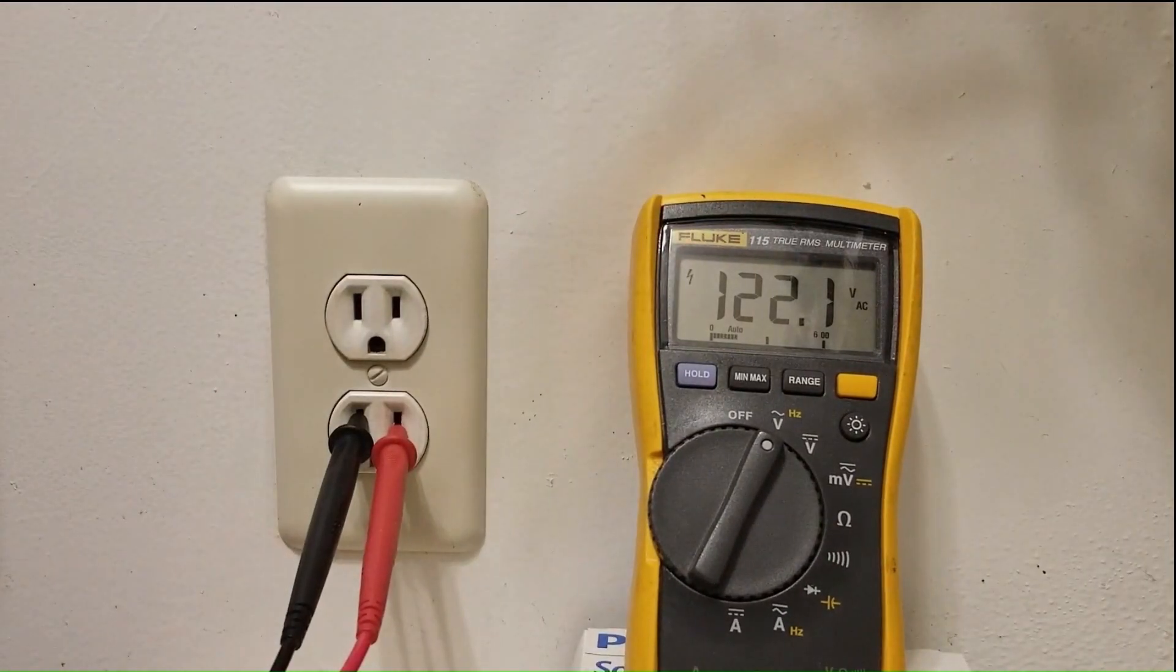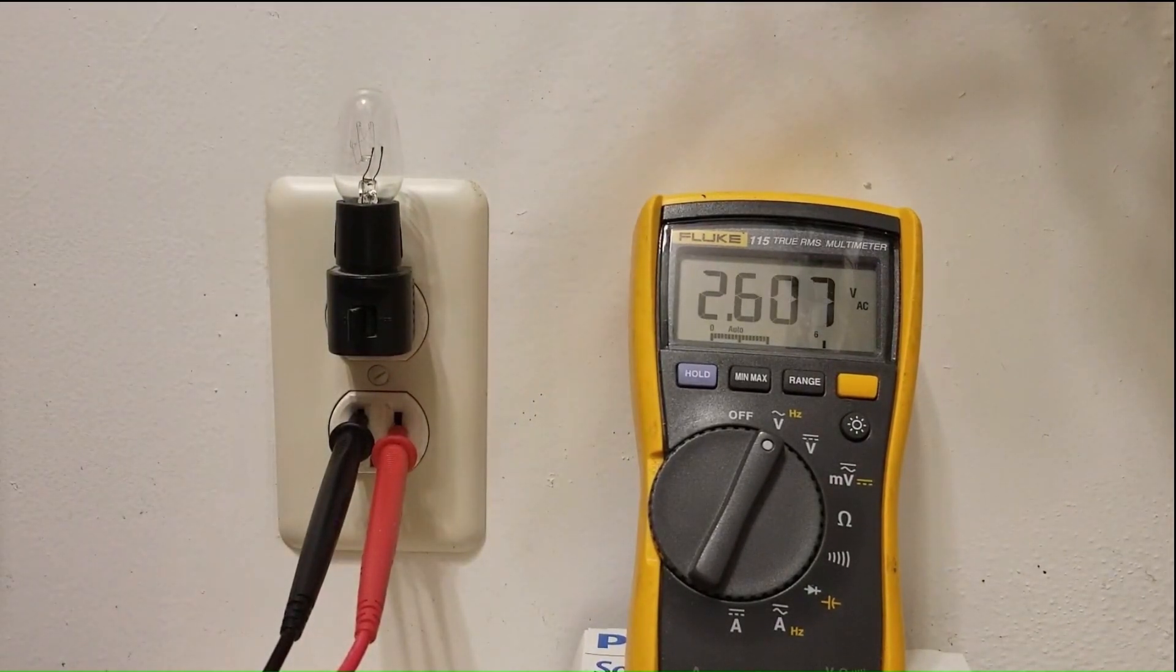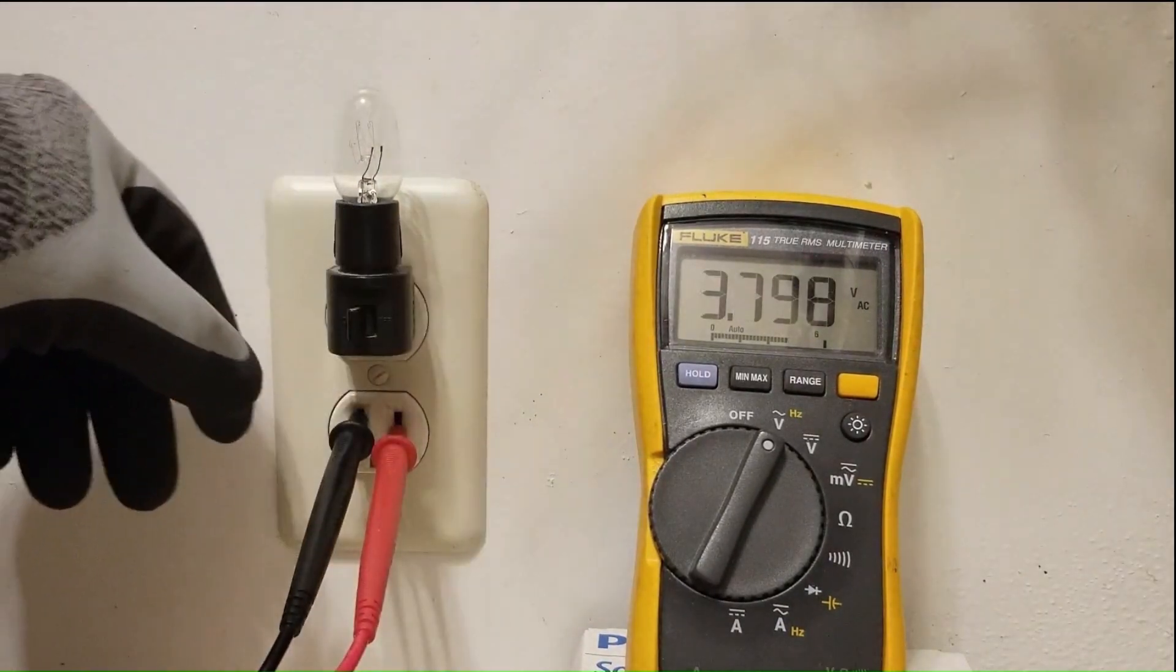I get 122 volts, which is what you would expect. But when I plug in the light, the voltage drops to just four volts. This means we have a compromised or high impedance voltage source where the issue only becomes apparent under load.